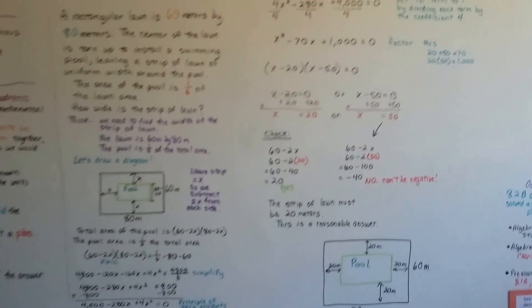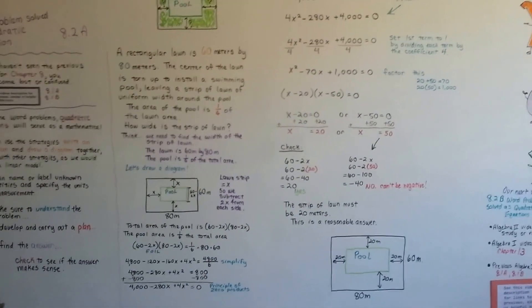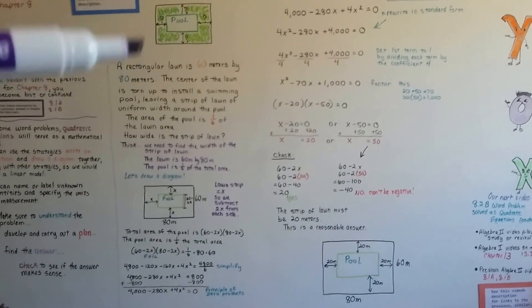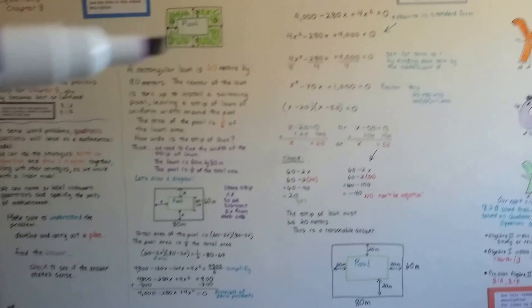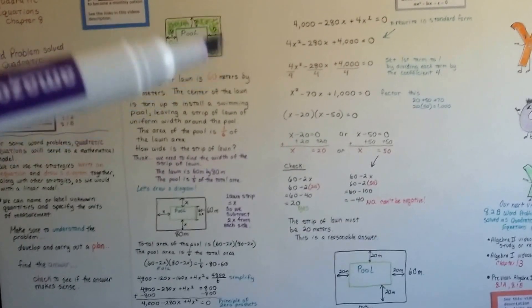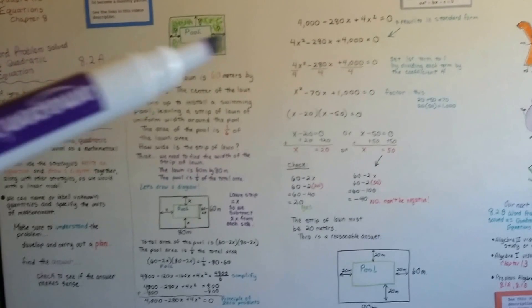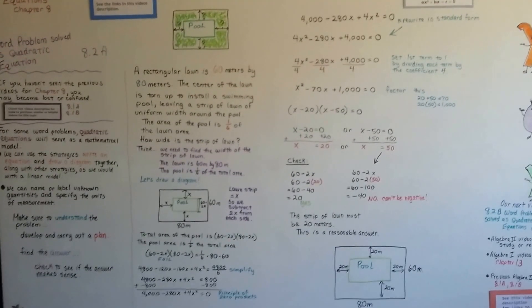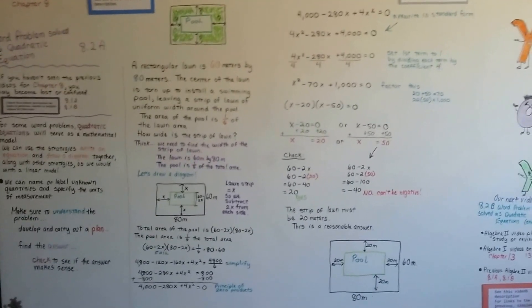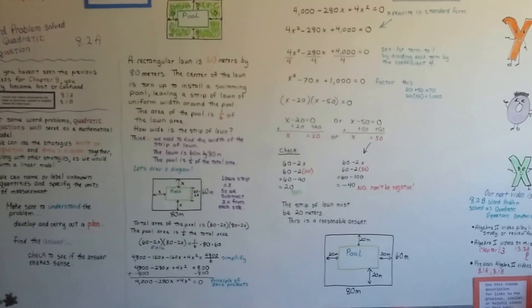So now you know how to solve this type of word problem when you need to find these values. That's x, that's x. So this is going to be the length minus 2x, and then you solve it. Keep trying. I'm proud of you. I'll see you next video.